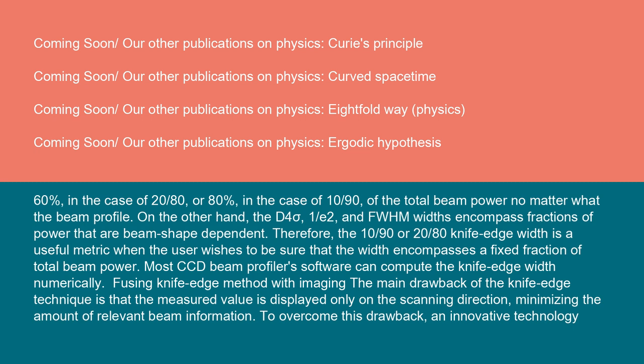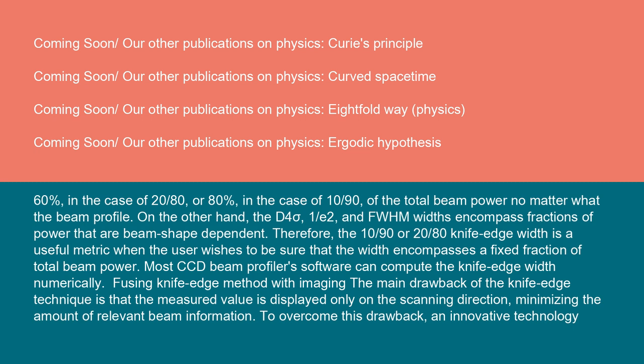Fusing knife edge method with imaging: The main drawback of the knife edge technique is that the measured value is displayed only on the scanning direction, minimizing the amount of relevant beam information. To overcome this drawback, an innovative technology offered commercially allows multiple directions beam scanning to create an image-like beam representation. By mechanically moving the knife edge across the beam, the amount of energy impinging the detector area is determined by the obstruction. The profile is then measured from the knife edge velocity and its relation to the detector's energy reading. Unlike other systems, a unique scanning technique uses several different oriented knife edges to sweep across the beam.